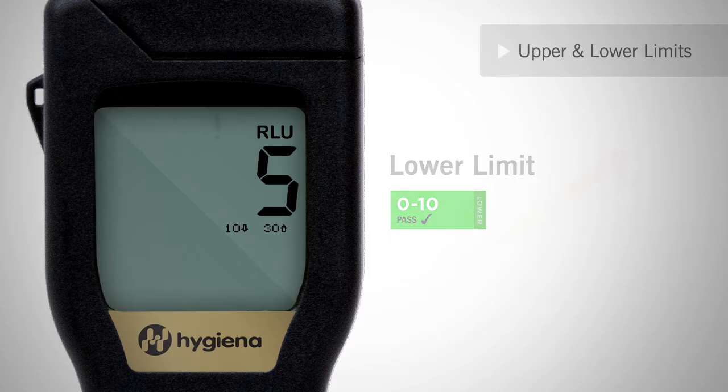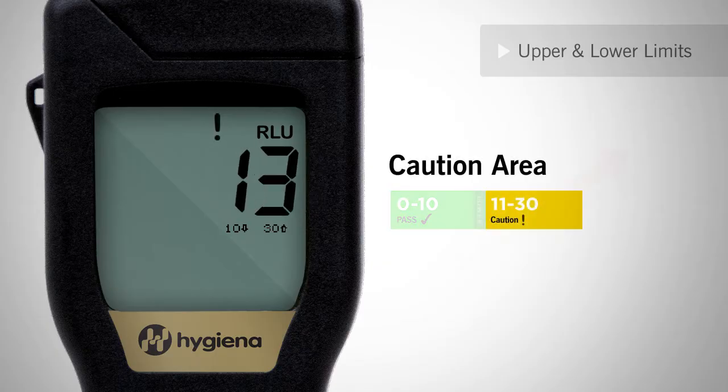A score in between the pass and fail threshold is a caution and will be indicated by an exclamation point. Depending on your internal protocol, the caution location should either be re-cleaned and re-tested until a pass result is achieved, or monitored for future problems.